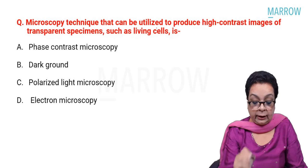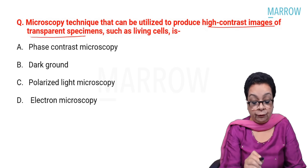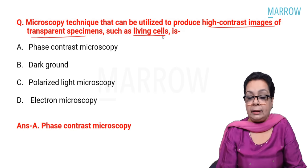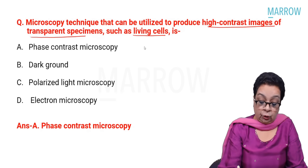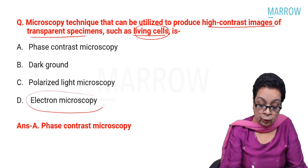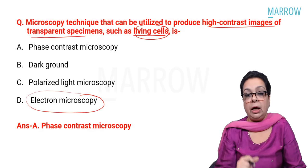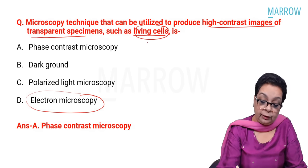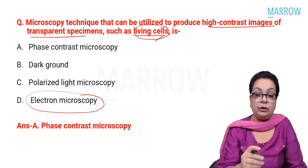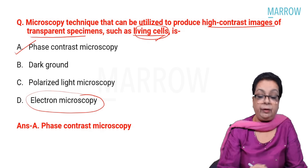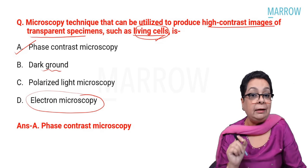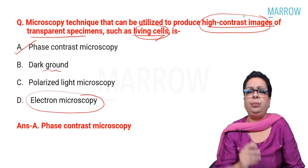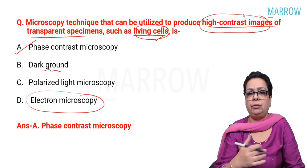Next question: which microscopy technique can be utilized to produce high-contrast images of transparent specimens, especially living cells? Options: phase contrast microscopy, dark ground microscopy, polarized light microscopy, and electron microscopy. In electron microscopy, vacuum is used because electrons get diverted in atmospheric air — so whatever we see is dead. Our answer is phase contrast microscopy. Dark ground microscopy can show living cells but doesn't provide the same contrast.